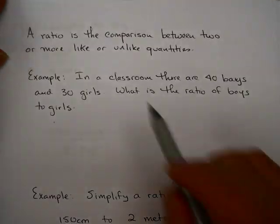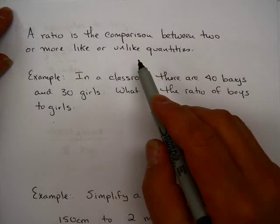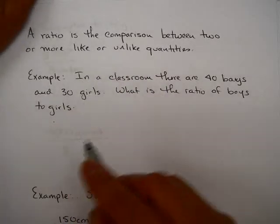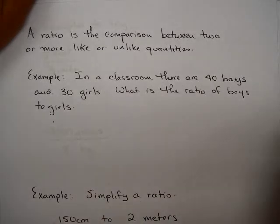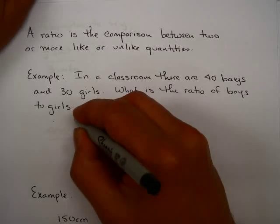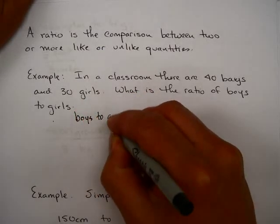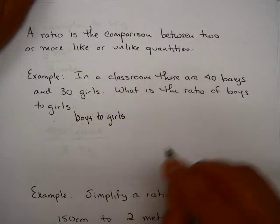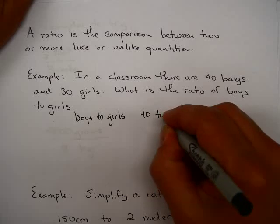A ratio is a comparison between two or more like or unlike quantities. Here's an example. In a classroom, there are 40 boys and 30 girls. What is the ratio of boys to girls? Notice this says boys to girls. So how many boys are there? Well, there's 40. And how many girls are there? There's 30.